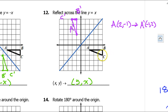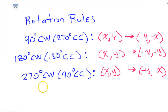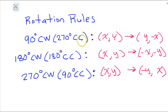Hopefully if you step back — maybe cock your head a little to the side — you can see that these are indeed mirror images of each other if the blue line is the mirror. Now, these are the rotation rules that you should have memorized. Make sure these are in your notes, but more importantly, make sure they're in your brain. 90 degrees clockwise is the same thing as 270 degrees counterclockwise, and vice versa.